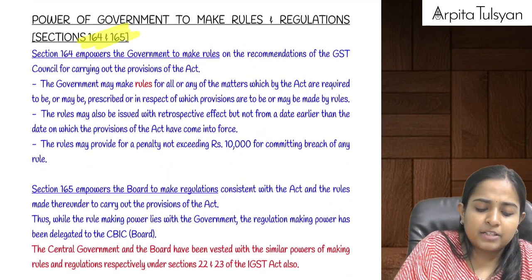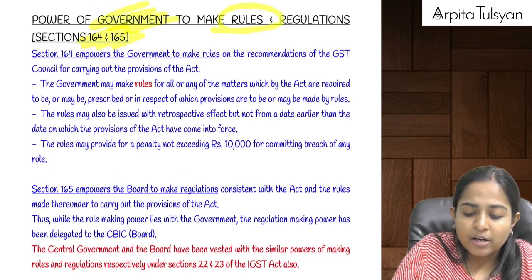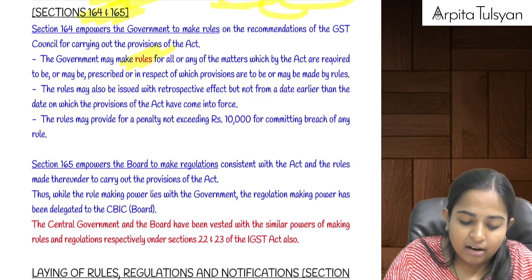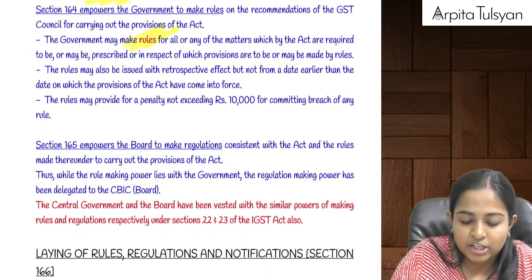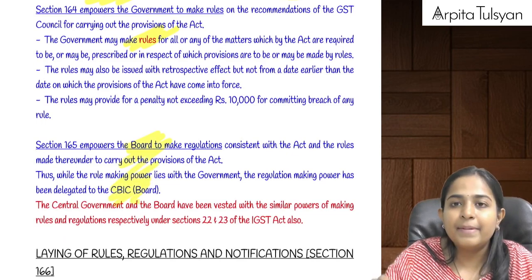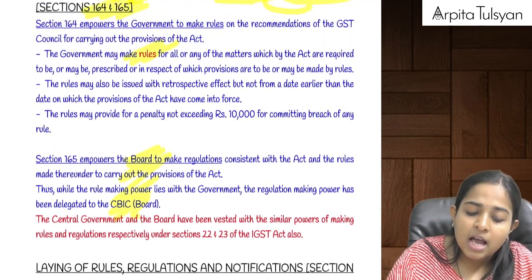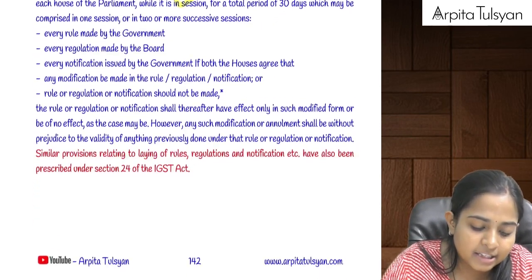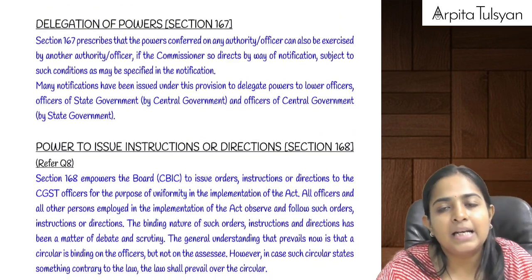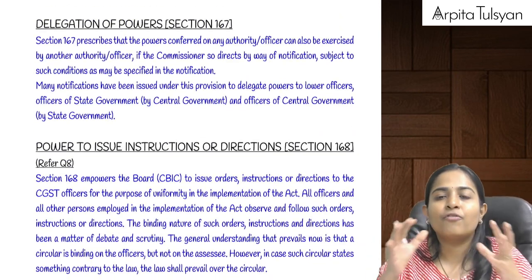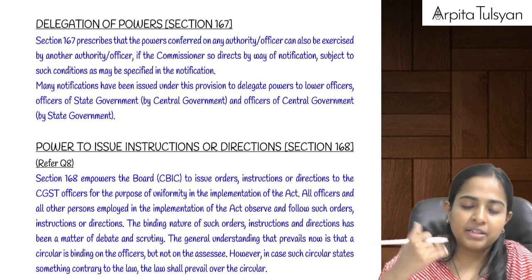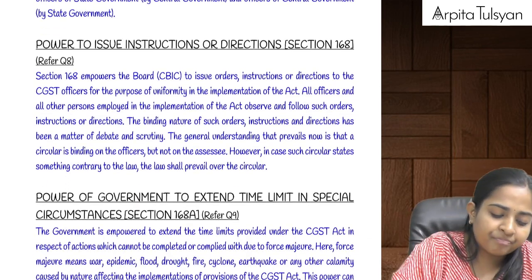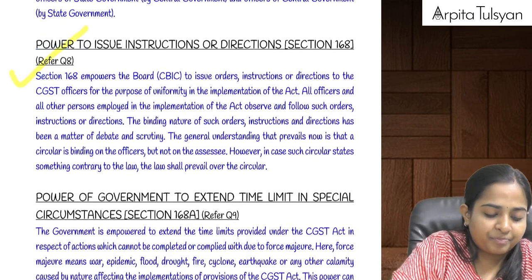Sections 164 and 165 give the government and CBIC the power to make rules and regulations. All rules under GST are made by the government, and all regulations are made by CBIC. Whenever any new rule, regulation, or notification is issued, it must first be laid before both houses of Parliament for at least 30 days, and if approved, it will be deemed to have been passed.